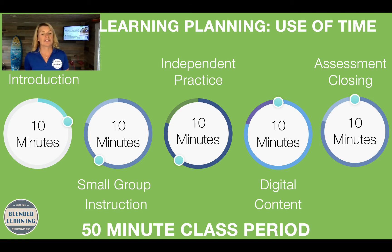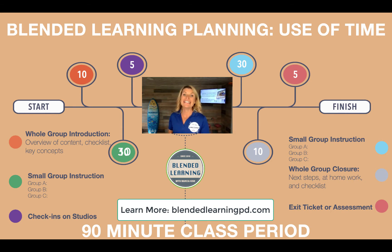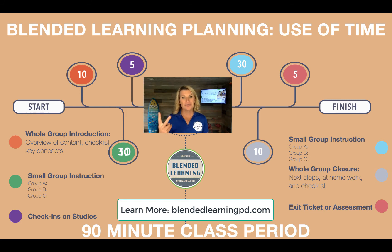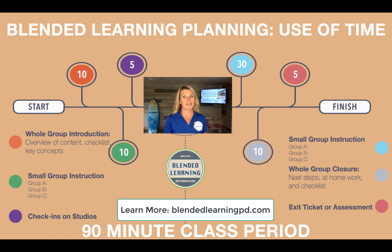If you're a block school or an elementary teacher with 90 minutes to teach language arts, your schedule might look like: 10 minutes of whole group instruction, 30 minutes of small group instruction, a 5-minute check-in, then another 30 minutes of small group instruction, then a closing exit ticket. The first small group is based on the pacing guide — targeted learning objectives for the current year. The second small group might be reteaching or checking understanding of the concept taught that day.